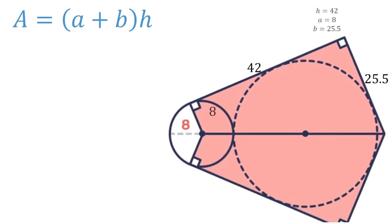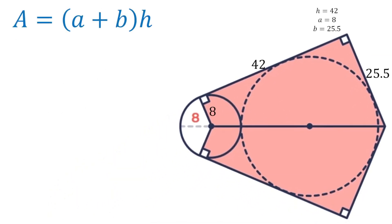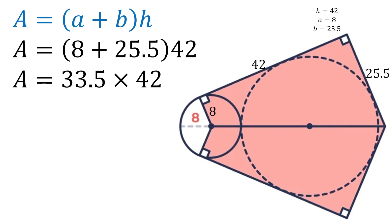So we have all that we need for our formula: a is 8, b is 25.5, h is 42. Substituting we'll have 8 plus 25.5 which is 33.5, multiplying that times 42 we get that the area is 1407 square centimeters.